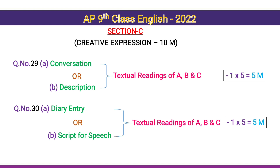Section C: Creative Expression for 10 marks. Question 29: A is Conversation; B is Description — there is an internal choice, and the best option is writing a description. This is completely from textual readings of A, B, C — select any one for 5 marks. Question 30: A is Diary Entry; choice is Script for Speech — also from textual readings A, B, C. Best option is diary entry, 5 marks.